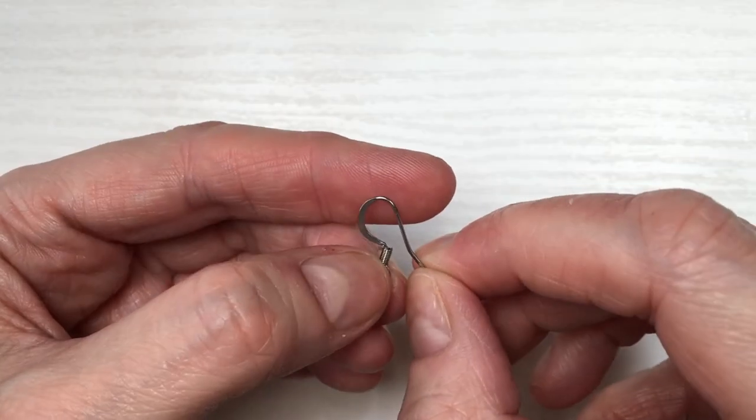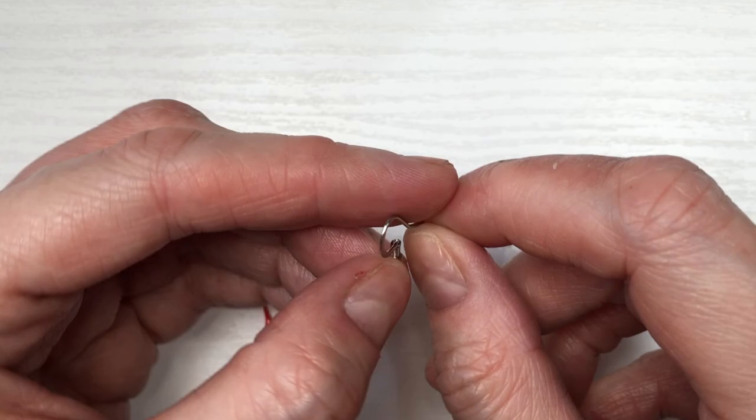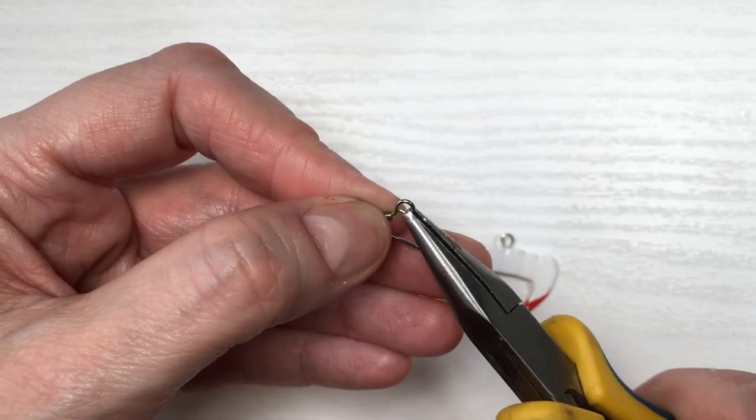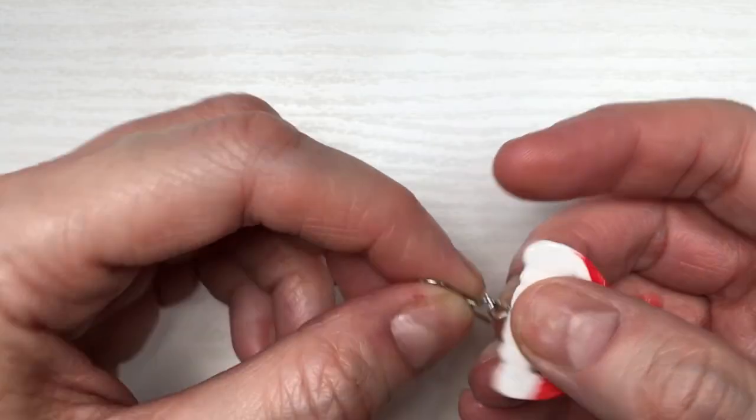They are flat on the front part, which I think is a really nice and delicate detail. I love them. Opening my ear wires, placing my charms, and then just closing the loop.